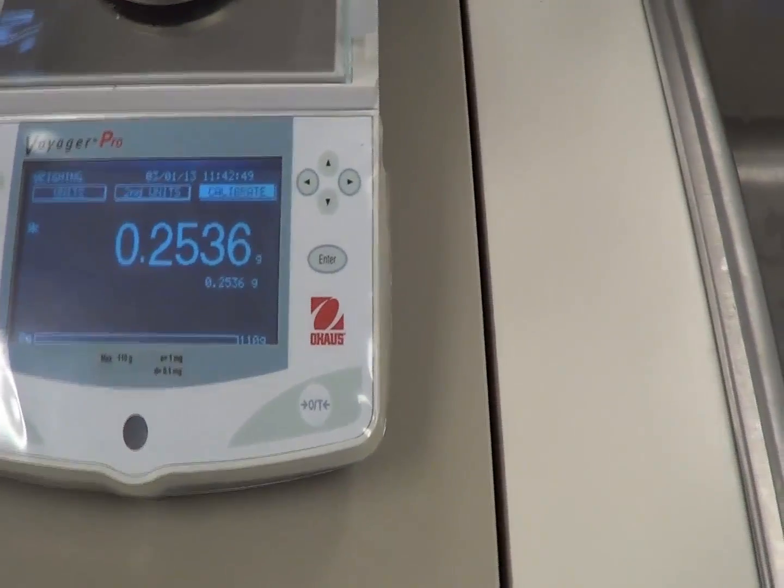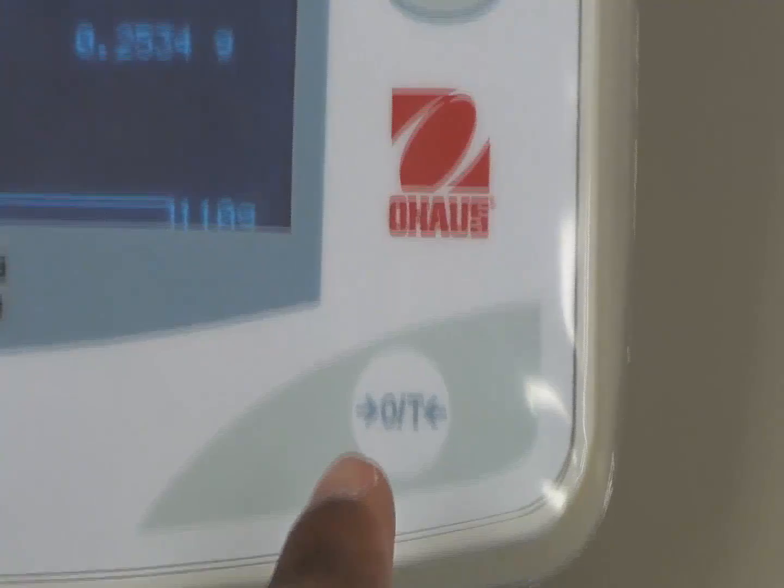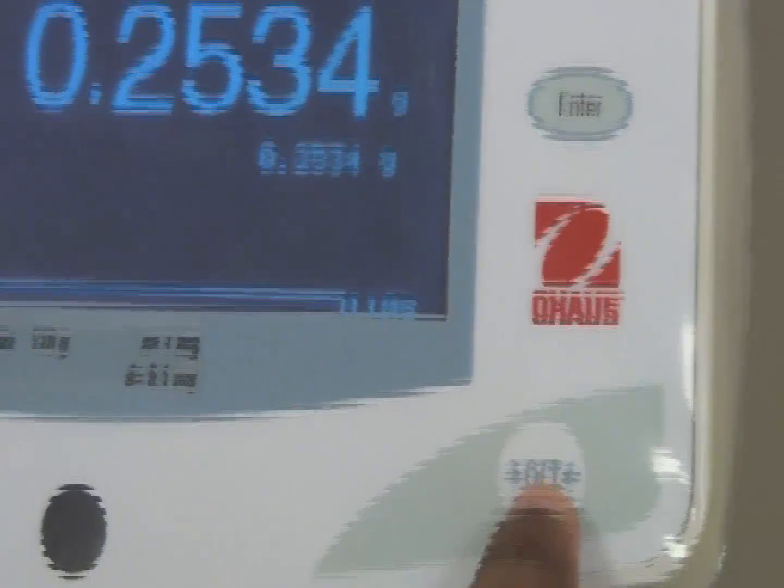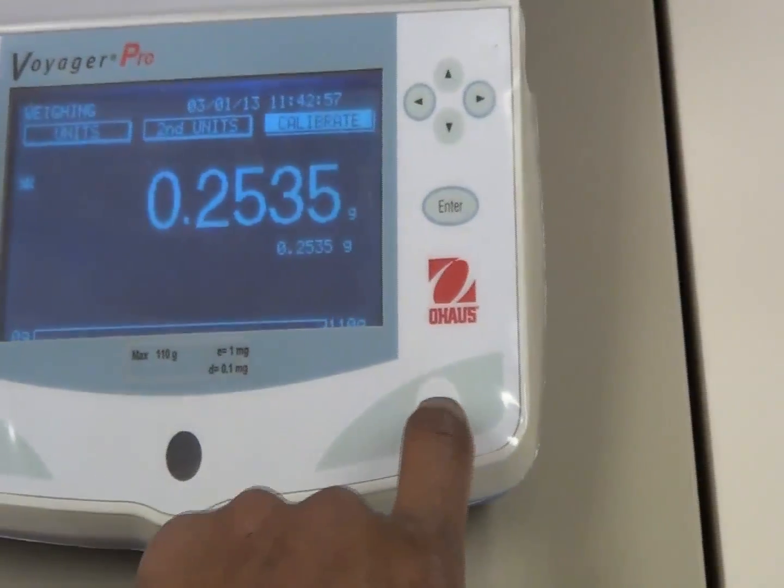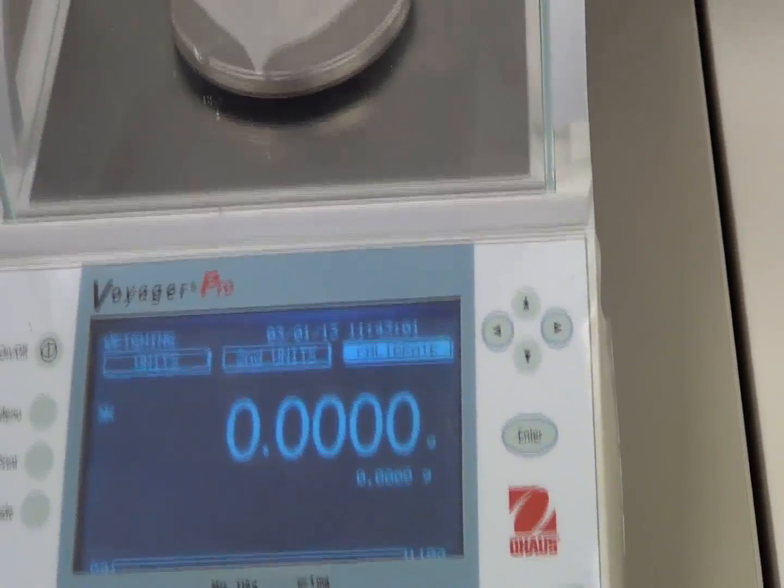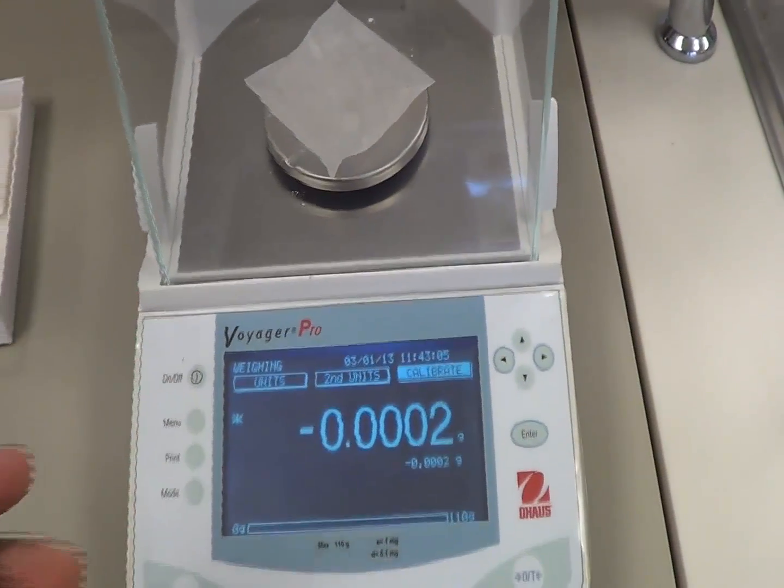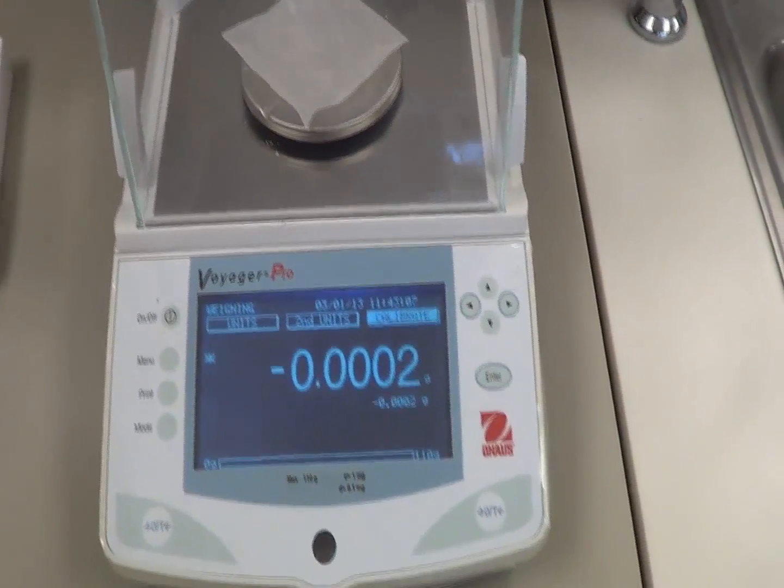So again, go back to this zero. Zero this weighing balance. Press the zero. If you press it, it's going to show you again zero. That means now you can put the drug, whatever, and weigh it, and you can calculate the weight of it.